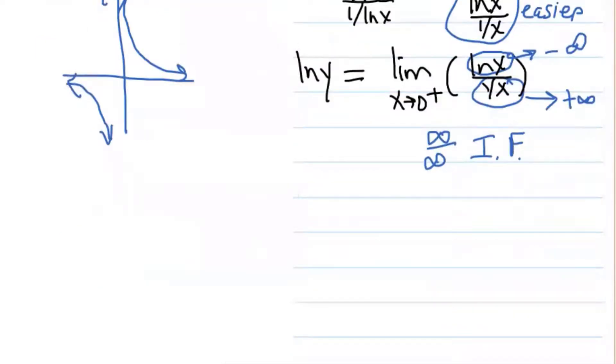So we're going to say that means that the natural log of y by L'Hôpital's rule is equal to the limit as x approaches zero from the right of, what's the derivative of the natural log of x? Good. One over x.